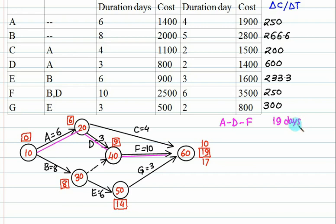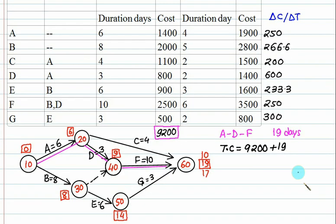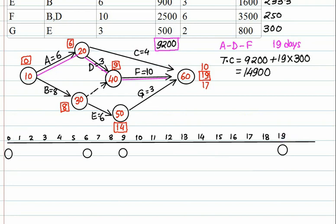For 19 days we can calculate the normal cost involved. The total cost is the normal cost of 9200, the project duration is 19 days, and the overhead cost is 300 per day. Mark from day 1 to day 19 on the bar chart. Activity A will take 6 days, so mark one circle below day 6. Activity D will finish by day 9, and activity F will finish by day 19.